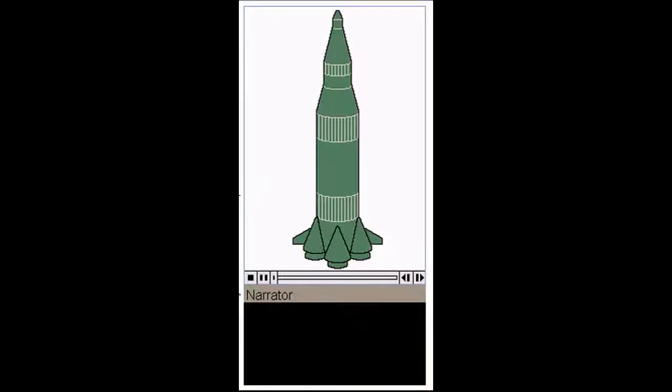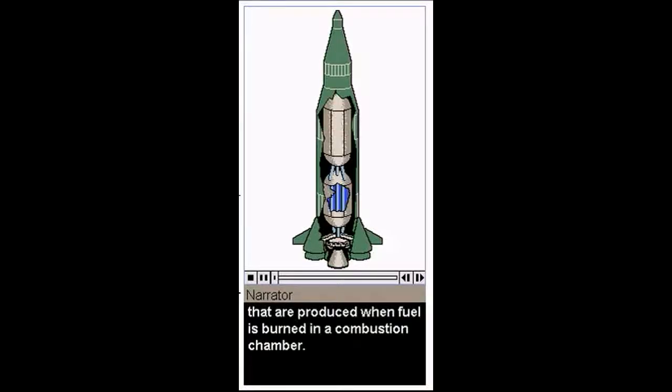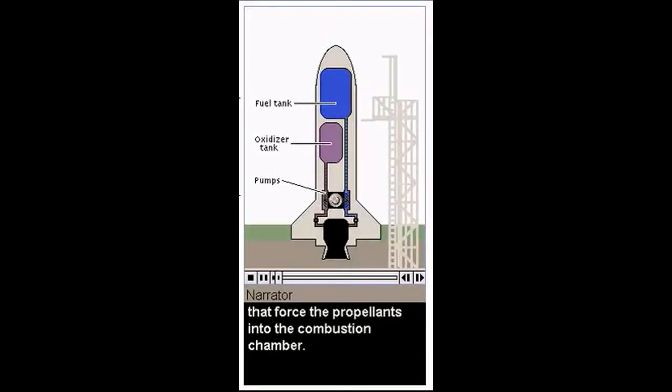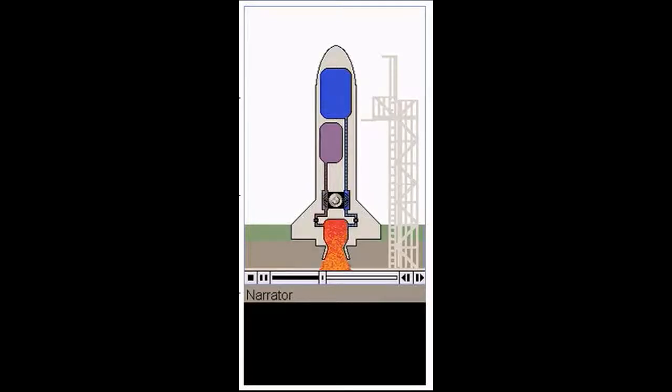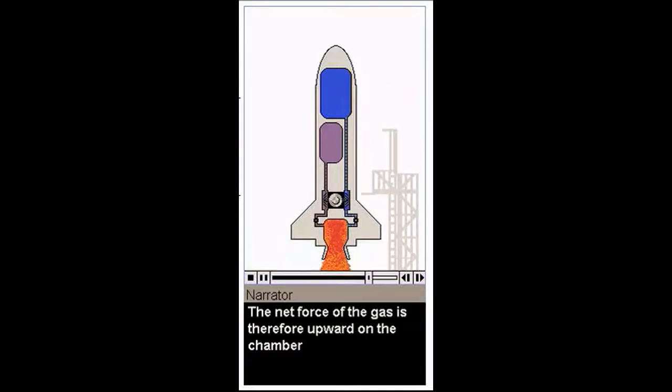A rocket is propelled by rapidly expanding gases that are produced when fuel is burned in a combustion chamber. In a liquid fuel rocket, fuel and oxidizer are stored as liquids in separate tanks. Pipes carry the liquids to pumps that force the propellants into the combustion chamber. Valves control the rate of flow of the propellants. The oxidizer mixes with the fuel, providing the oxygen necessary for it to burn, and large quantities of expanding gases are produced. Hot gas pushes against the walls of the combustion chamber. The force exerted by the gas against one side of the chamber is balanced by the force exerted on the opposite side, so there is no sideways force. However, gas pressure against the top of the chamber results in an unbalanced force, because there is no wall at the nozzle to push against. The net force of the gas is therefore upward on the chamber, and the rocket is propelled.